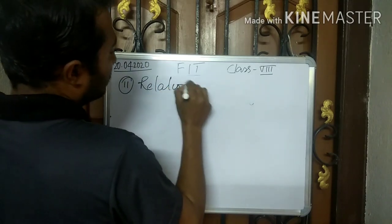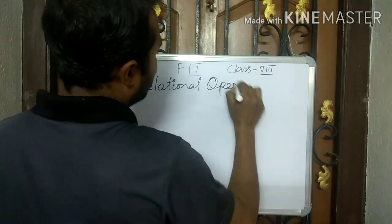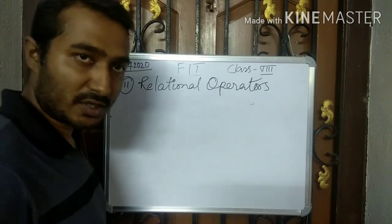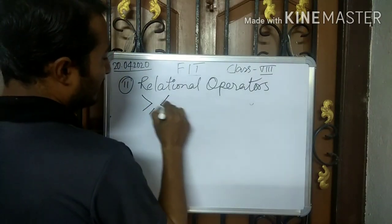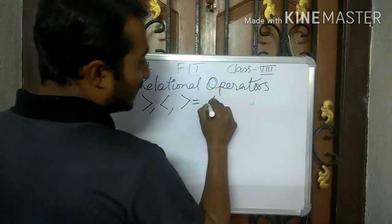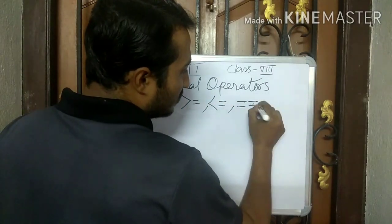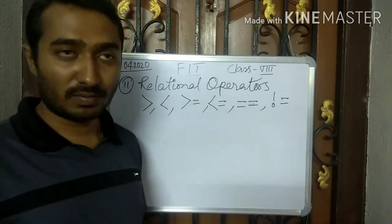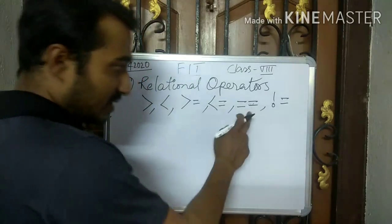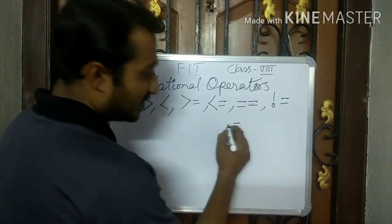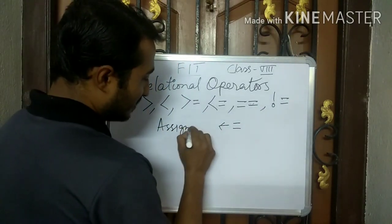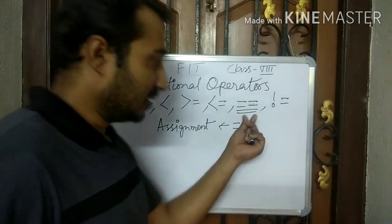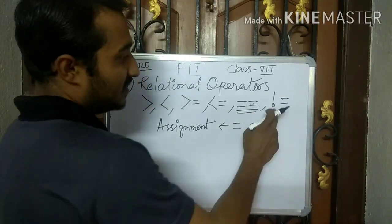The second type is relational operators. How many relational operators are there? There are 6 relational operators: greater than, less than, greater than equals to, less than equals to, equals to, and not equals to. Note that the single equals to is the assignment operator, while double equals to is the relational equals to operator in C++, and the not equals to operator uses the != symbol.